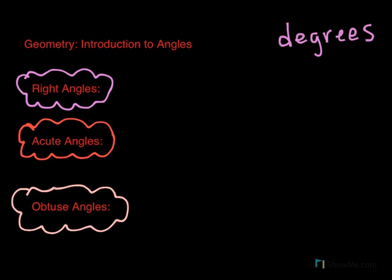So let's start with right angles, and I've marked it in purple here. So right angles are exactly 90 degrees, and they're formed when two perpendicular lines intersect. So here we have two intersecting perpendicular lines, and they form a 90 degree angle.